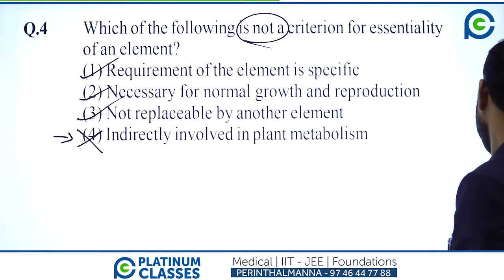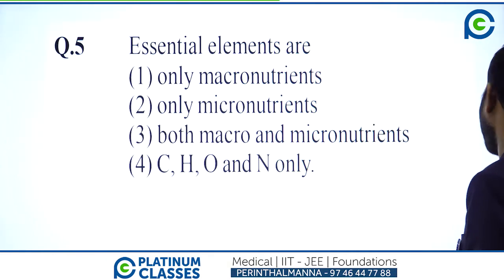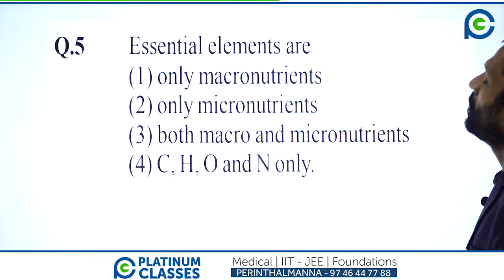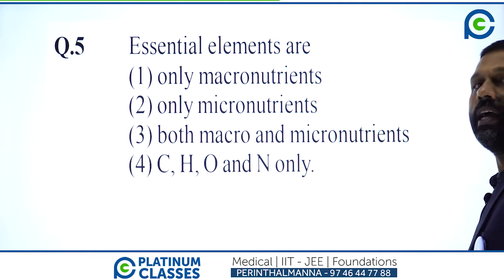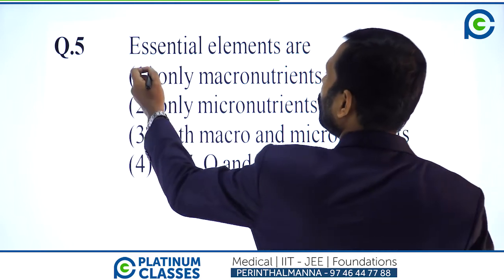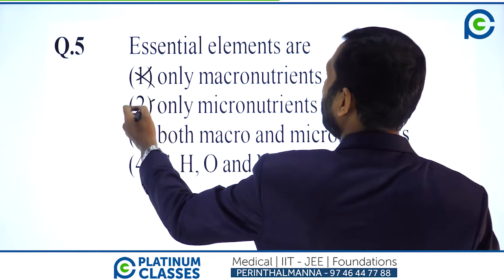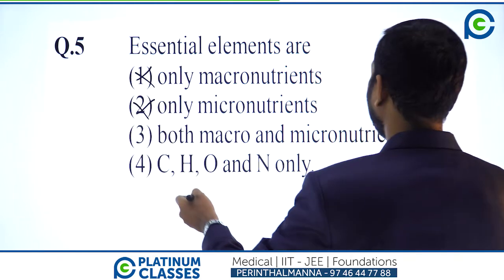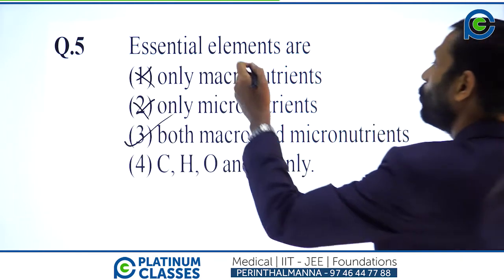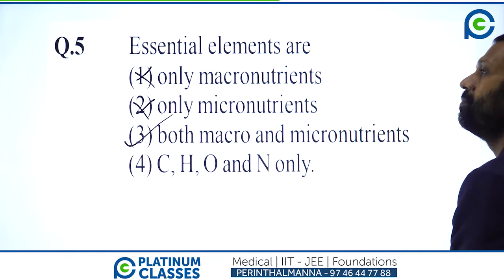Question 5: Essential elements are — which option is correct? Plants grow using all elements, macro and micro, only macro elements, only micro elements, or both macro and micro elements. The correct answer is option 3: both macro and micro elements are essential.